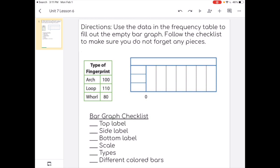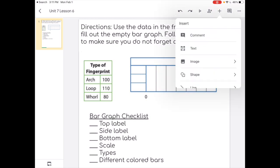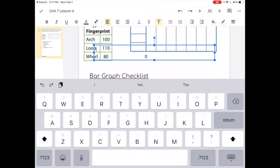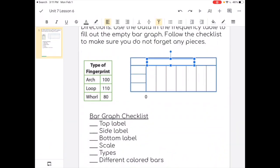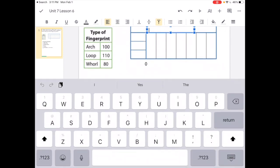So I'm going to start by hitting the plus sign and hitting a text box. It's going to pop up and it's just all big in the middle. I'm going to move it to the top to create my top label. We have the name of this bar graph is type of fingerprint.